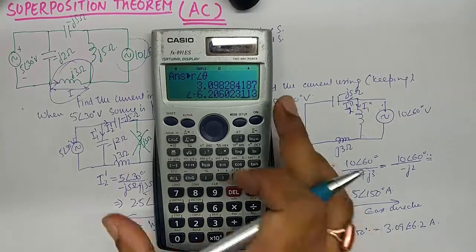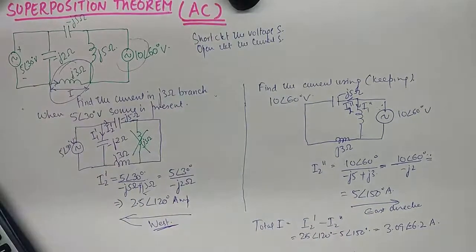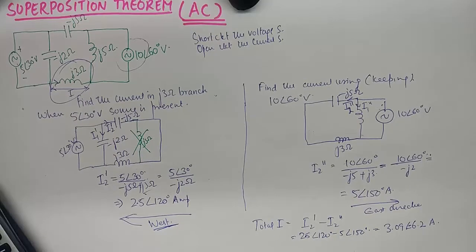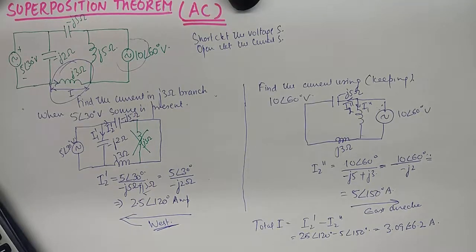That's how you can find current in superposition theorem in any particular branch if the network is an alternating current network. And I hope this quick tutorial was helpful and if it helped please consider subscribing to the channel. You have a great day ahead. Bye.